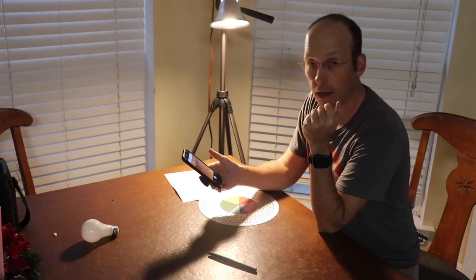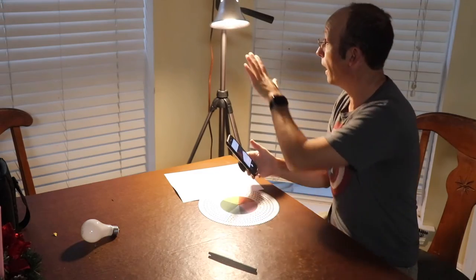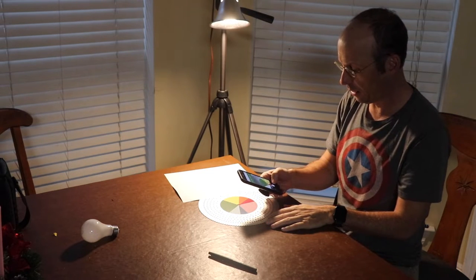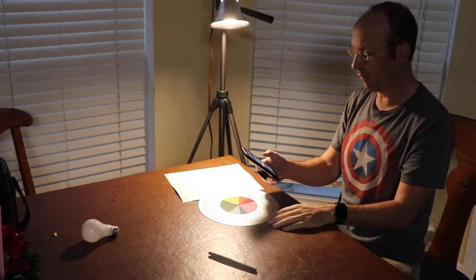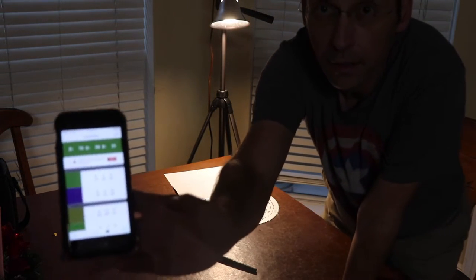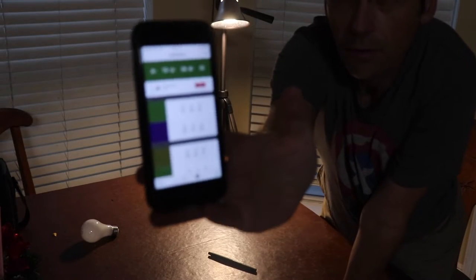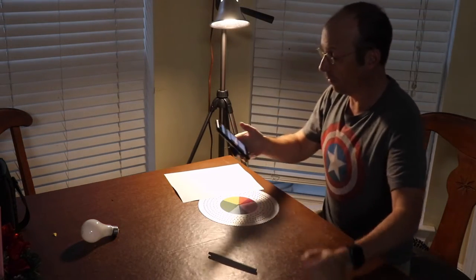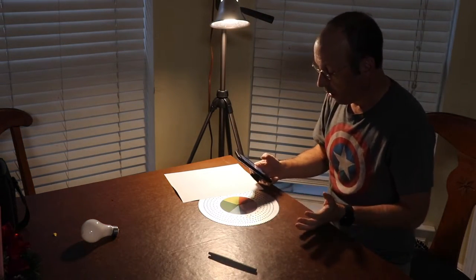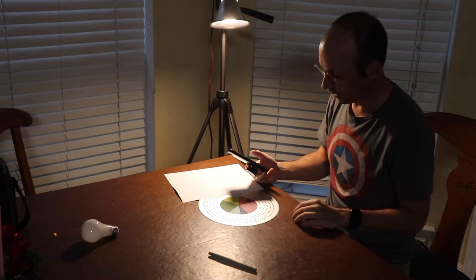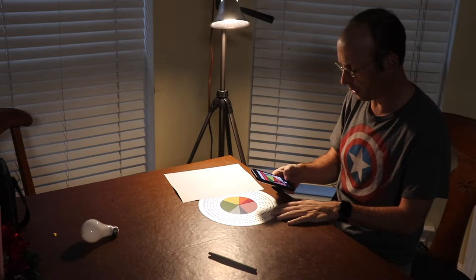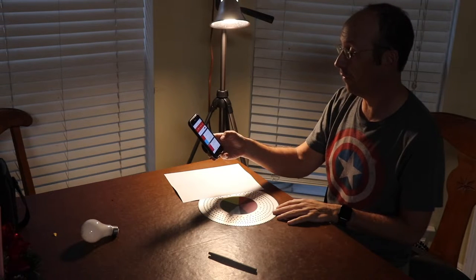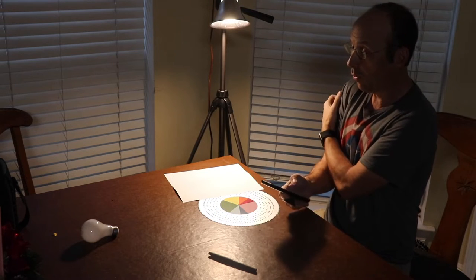I have this app called Color Picker - I'll put a link in the notes down below. This has a little crosshair and if you put the crosshair over something you can measure the RGB values. Right now I have my LED light in here. Let me look at the green. I get a green value of 70 red, 94 green, and 31 blue. Let's measure the orange - that's 205 red, 51 green, 15 blue, so it has very little blue.